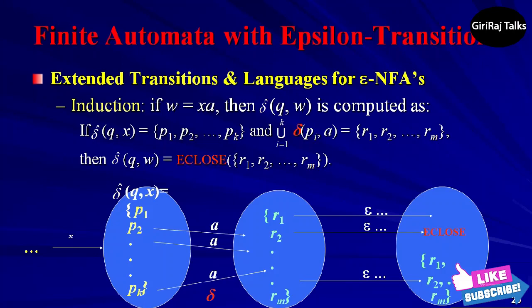Second, let union of i=1 to k δ(pi, a) be the set {r1, r2, ..., rm}. That is, follow all transitions labeled a from states we can reach from q along paths labeled x. The rj's are some of the states we can reach from q along paths labeled w. The additional states we can reach are found from the rj's by following epsilon-labeled arcs in step 3.